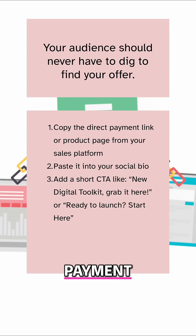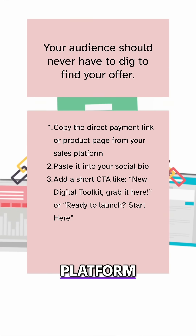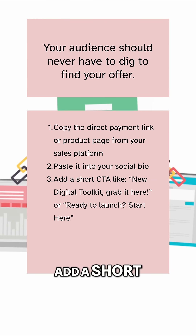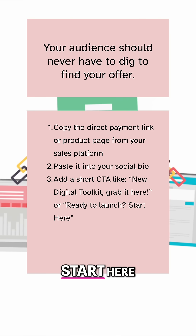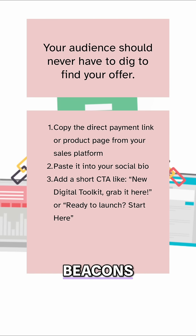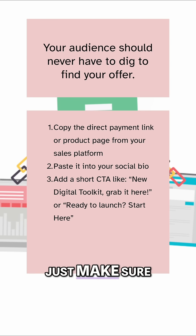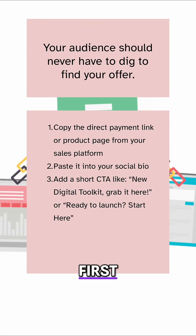Copy the direct payment link or product page from your sales platform and paste it into your social media bio. Add a short CTA like 'new digital toolkit — grab it here,' or 'ready to launch — start here.' If you're already using a link-in-bio tool like Linktree, Beacons, or Stan Store, just make sure your main product or offer is listed first.